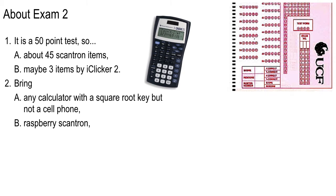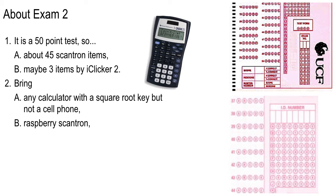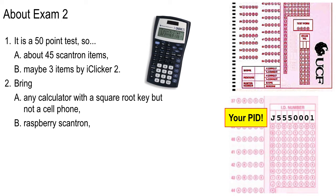Bring the raspberry-colored Scantron — the one where you bubble in your PID. We didn't have any errors on our PIDs, did we? You guys are the first ever genius section not to mess up a single PID or a single test form. Darian and me nagging you as you handed in your tests worked. So you're going to do it again — put in your PID. It's the number on your ID card; you don't have to bubble in the letter, but you do have to bubble in the number. And bubble in test form A, B, C, or D depending on which one you get.